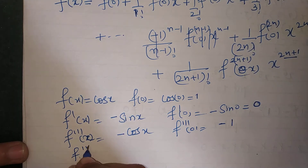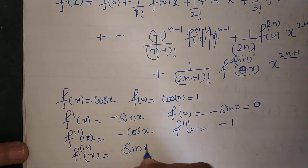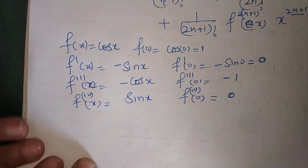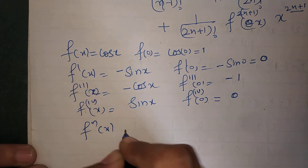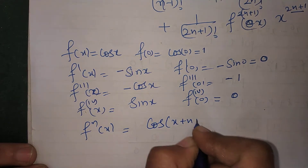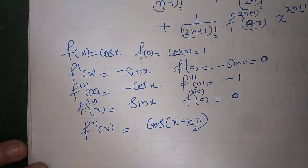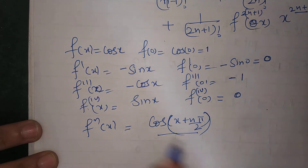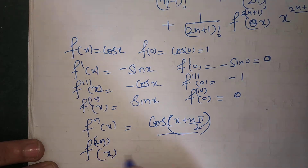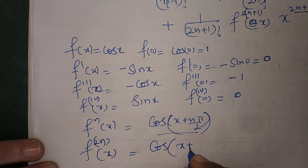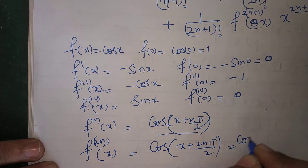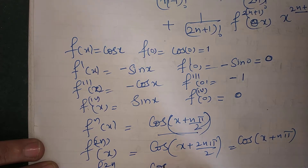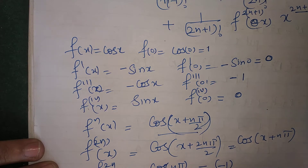The fourth derivative of f at x is sin x, so the fourth derivative at 0 is 0. In general, f^n(x) = cos(x + nπ/2). So f^(2n)(x) = cos(x + 2nπ/2) = cos(x + nπ), and f^(2n)(0) = cos(nπ) = (-1)^n.